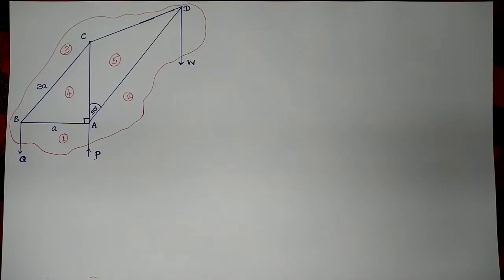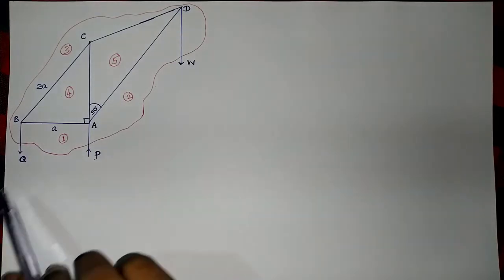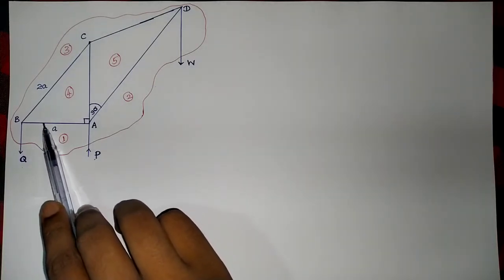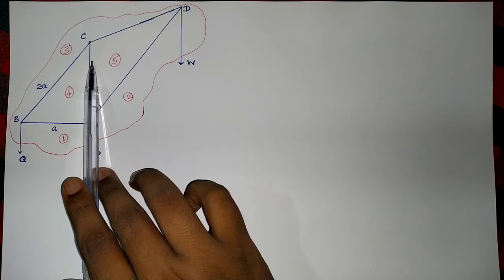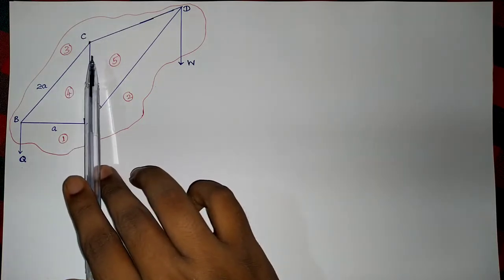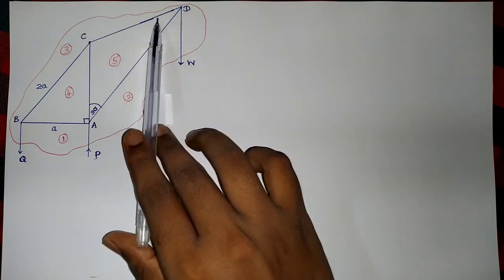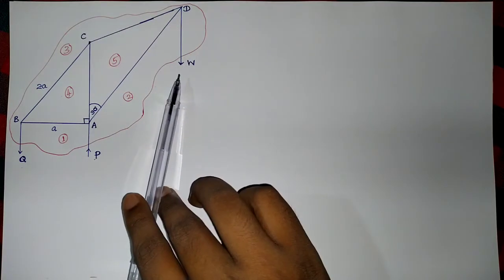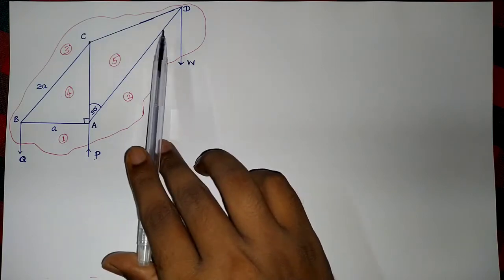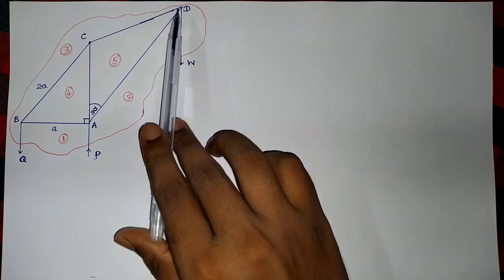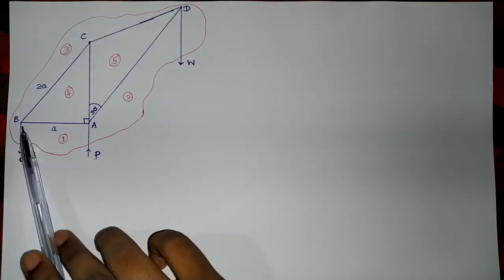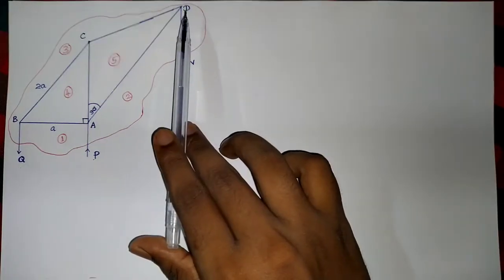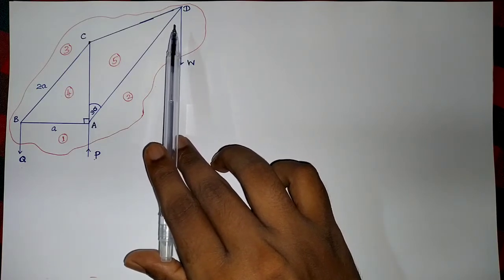At point B we have three forces; the direction of Q is known, so only two are unknown. At point C we have three rods joined together and all three stresses are still unknown. At point D we have two rods and one external force W whose direction is given, so only these two stresses are unknown. We can start our stress diagram from either point B or D, because B and D are the points having only two unknown forces.